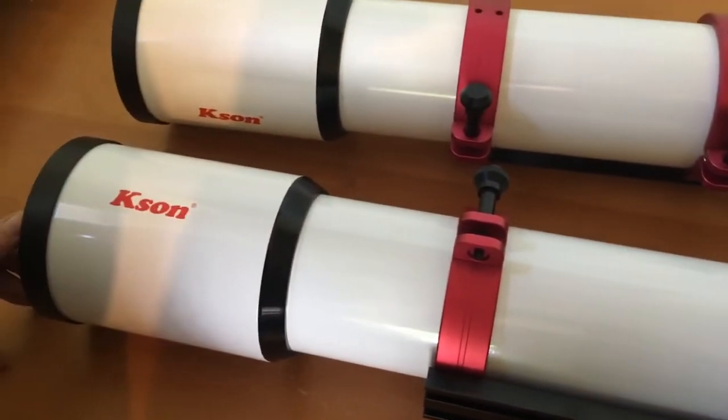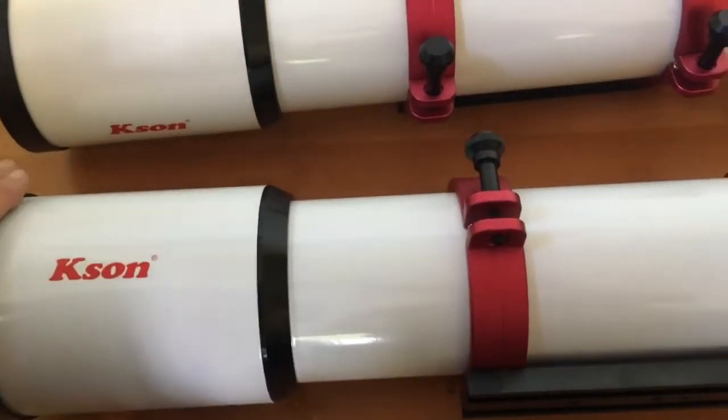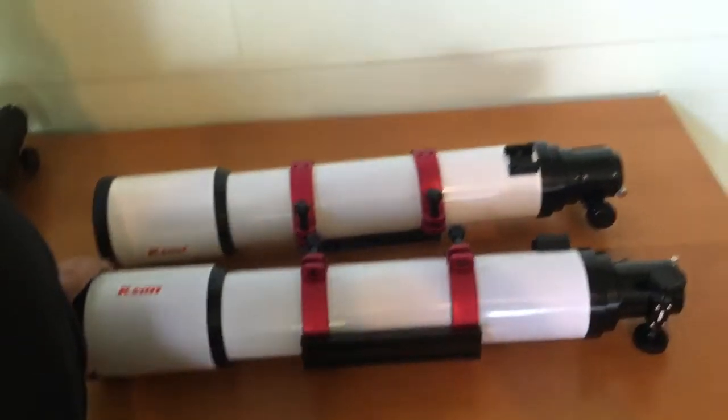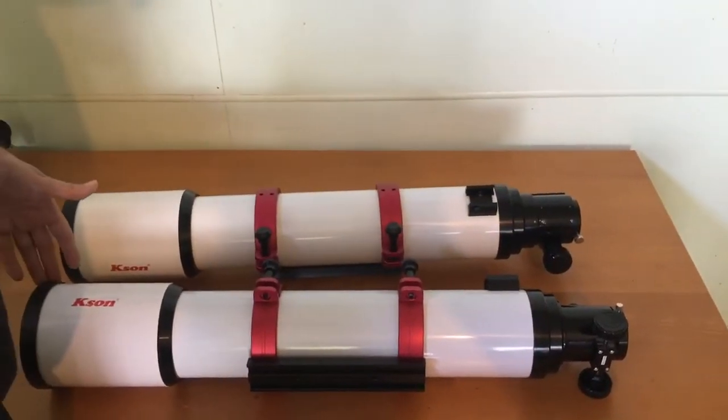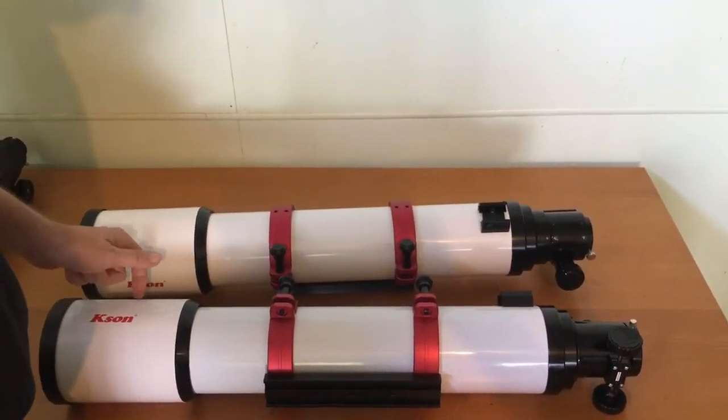Well, obviously there is quite a difference because whereas the Saxon weighed 2.2 kilos, this Kason model is actually 3.4 kilograms. So it's a much different instrument in the way that it's built.